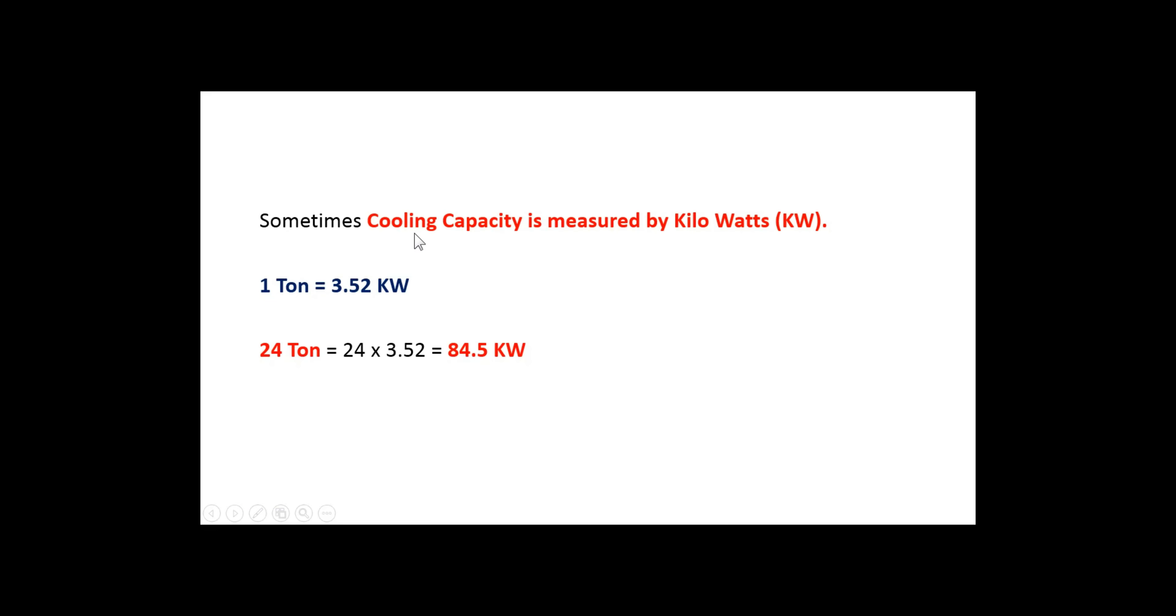Sometimes cooling capacity is measured by kilowatts. Here is the conversion from ton to kilowatts. One ton equals 3.52 kilowatts. Our requirement, as per our calculation, we found 24 ton chiller is required. Then, 24 times 3.52 equals 84.5 kilowatts.